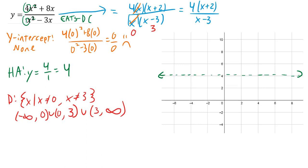I look at my holes. Holes come from excluded values that canceled out. 0 was an excluded value but it no longer is after canceling, so I have a hole with an x-coordinate of 0. The y-coordinate I get by plugging 0 back into the simplified equation.